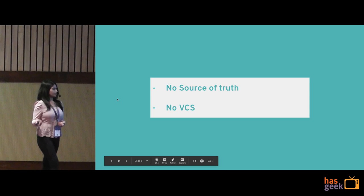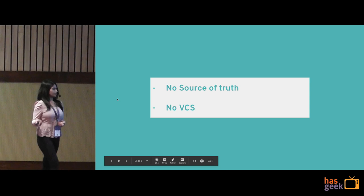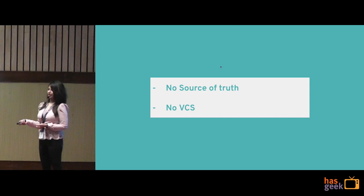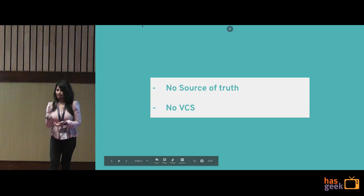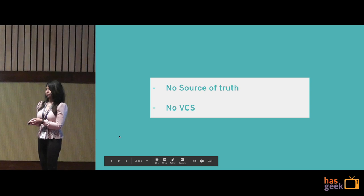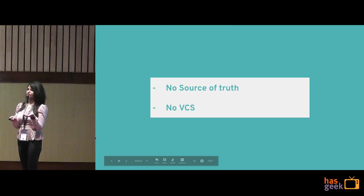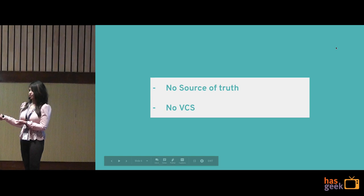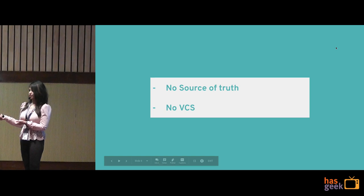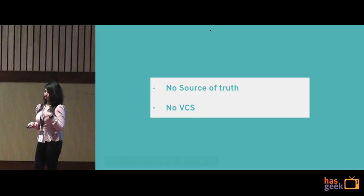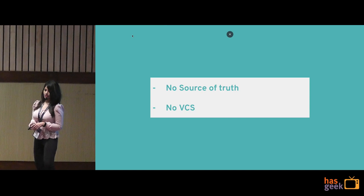There is also no source of truth and no version control at all. For example, say I came to work today, configured my network device, changed the entire configuration, and left for the day — everything done manually. Say I fall sick tomorrow and a colleague comes in to work on the same device, but he's not aware what's been changed or what the current state of the devices is. If there are more than 20 devices, it's very painful to check every configuration manually and then push another configuration. There is no source of truth, no version control.